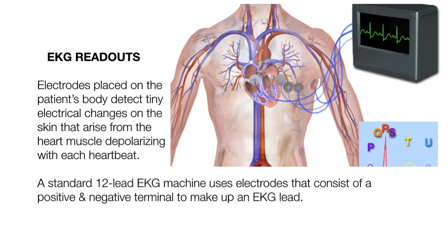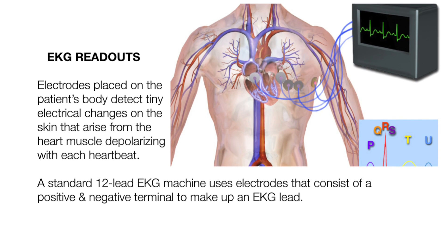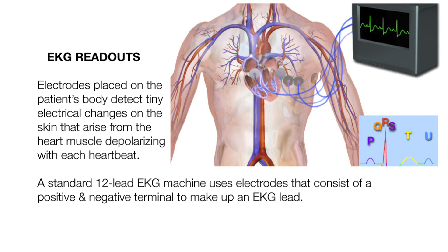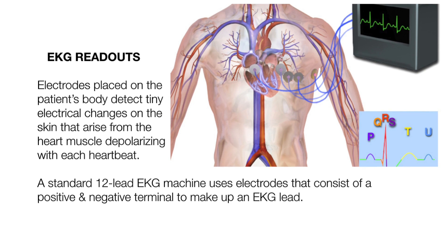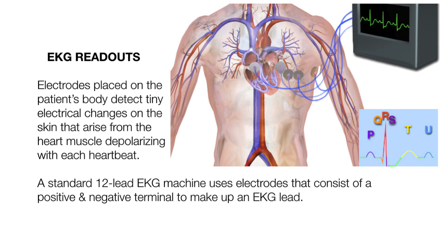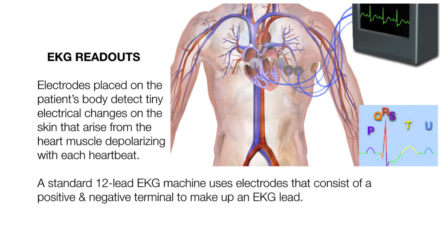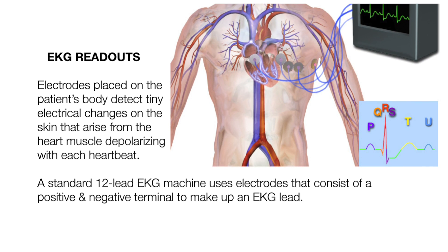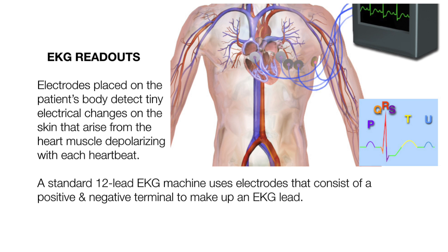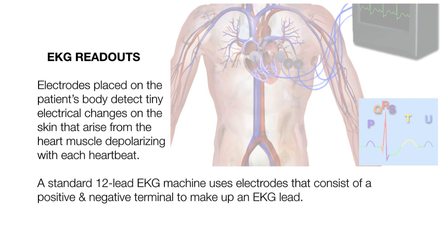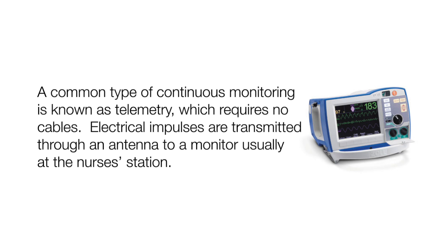Electrodes placed on the patient's body detect tiny electrical changes on the skin that arise from the heart muscle depolarizing with each heartbeat. A standard 12-lead EKG machine uses electrodes that consist of a positive and negative terminal to make up an EKG lead. A common type of continuous monitoring is known as telemetry, which requires no cables. Electrical impulses are transmitted through an antenna to a monitor usually at the nurse's station.